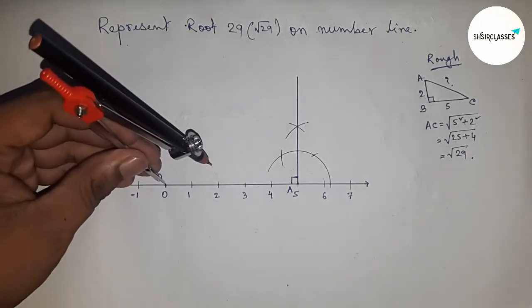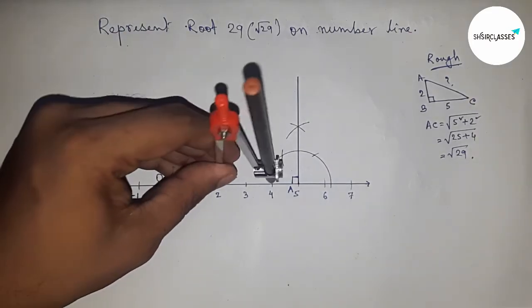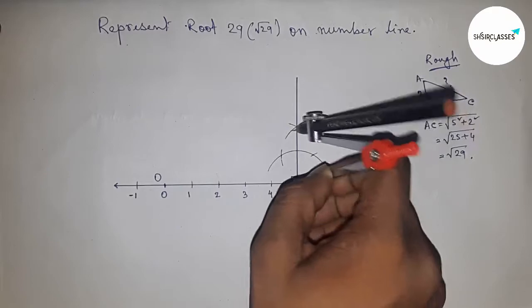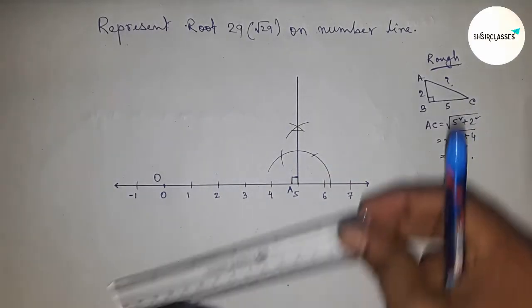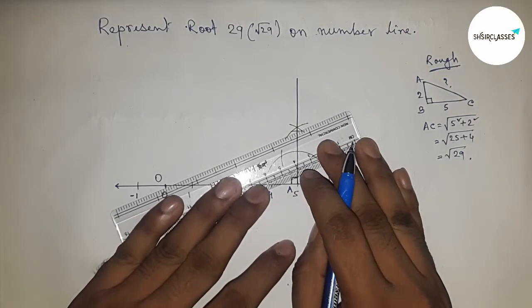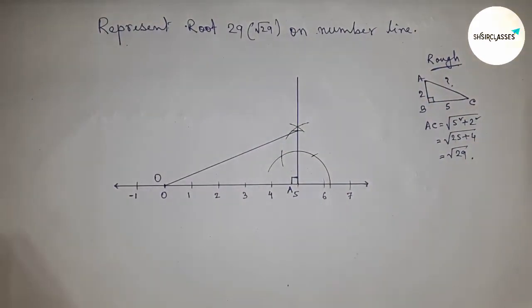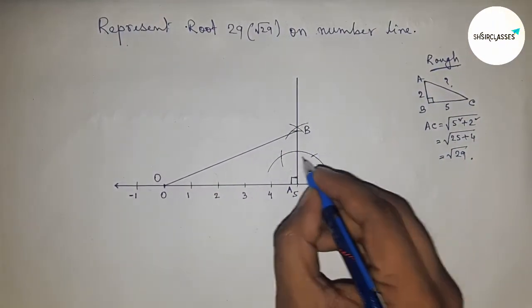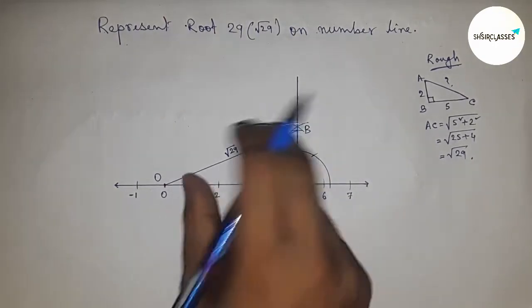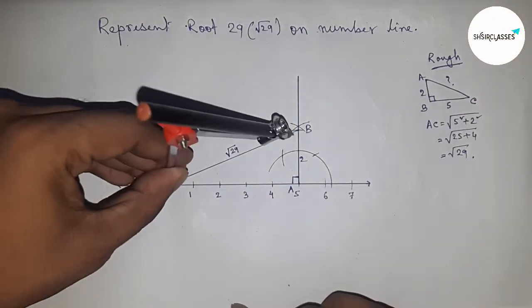Taking the length O to 2. Putting this here and cutting the line. Next, joining this to get the hypotenuse. So we got the hypotenuse and this is B point, and this is 2. Obviously, this is root 29.